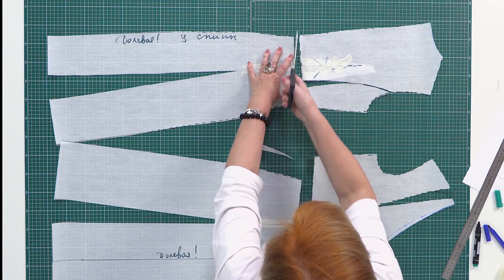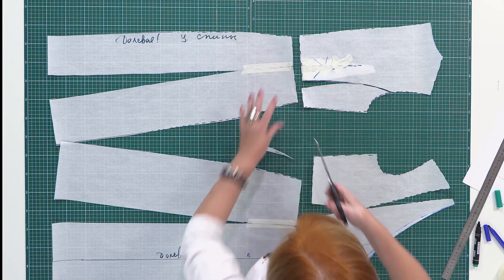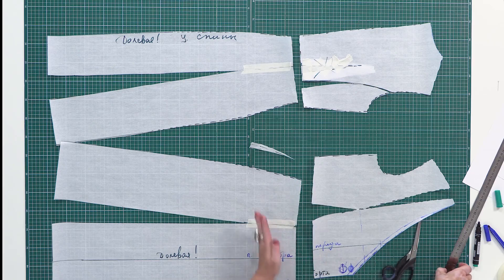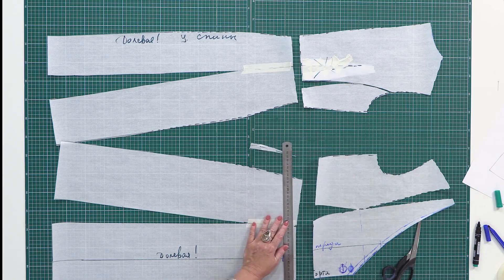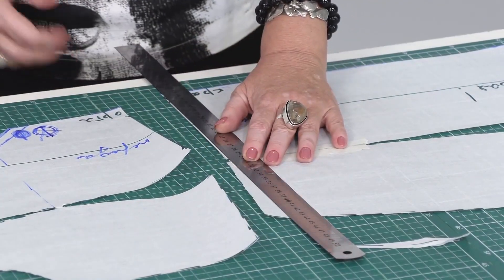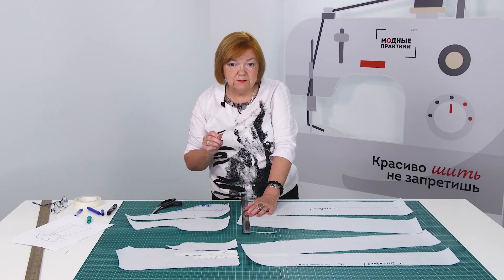Now you know how to flare the skirts by closing the darts. This is a very useful technique. Notice that the waistline is not straight anymore. It's slightly round. You can clearly see it now. Be very attentive. Think about such things in advance.